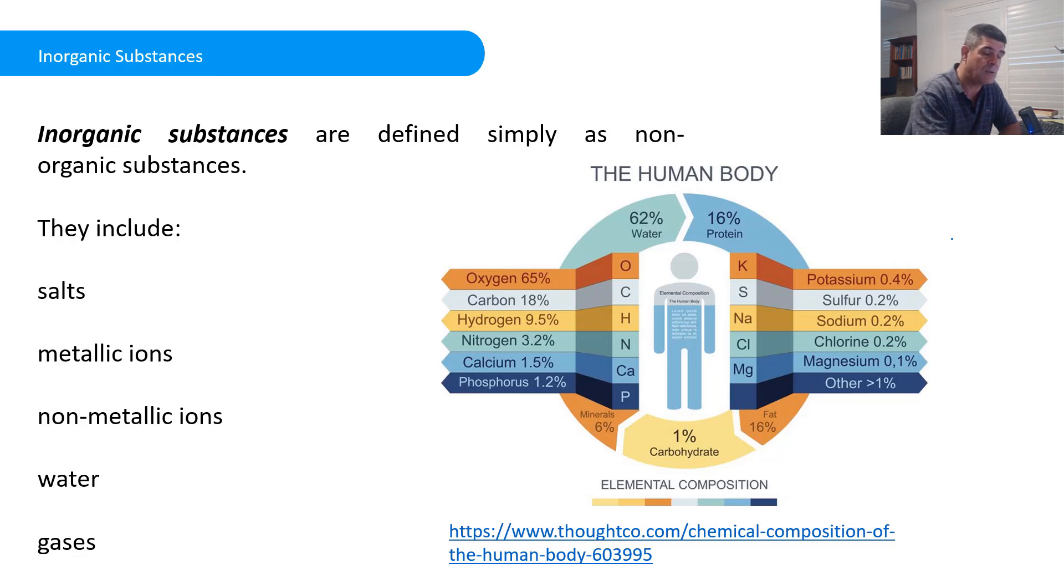And they'll include salts. So some of those salts might be calcium phosphate, which may be part of some of the harder structures in our bodies, like teeth or bones.